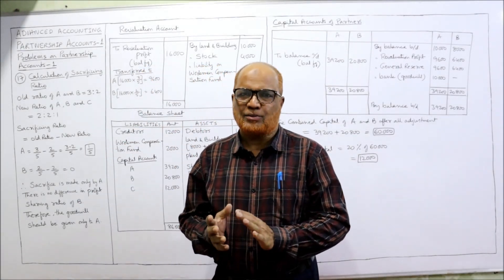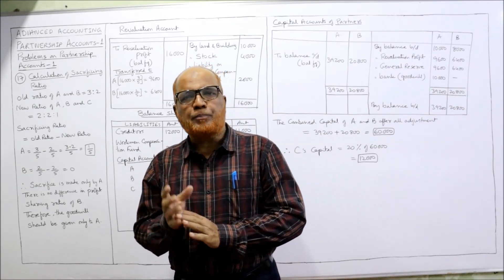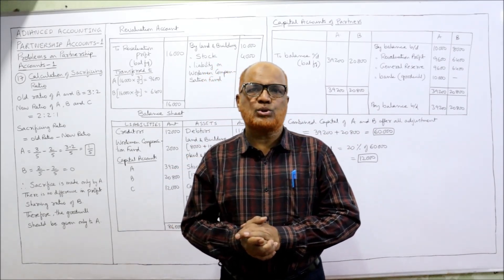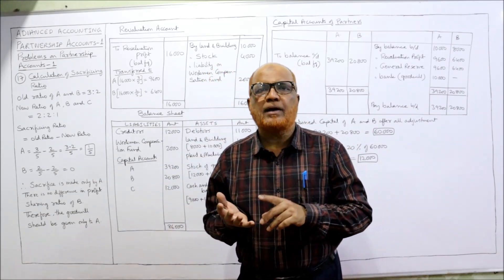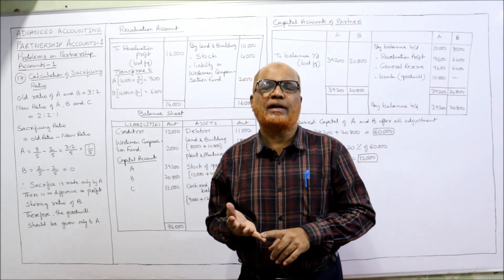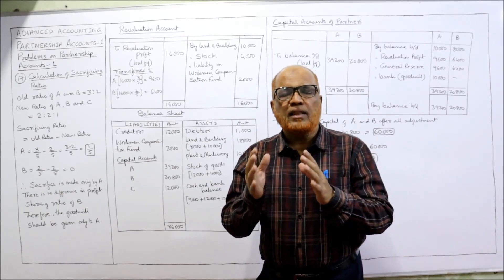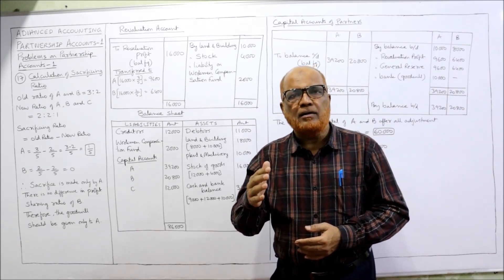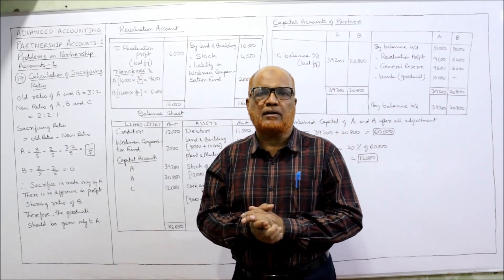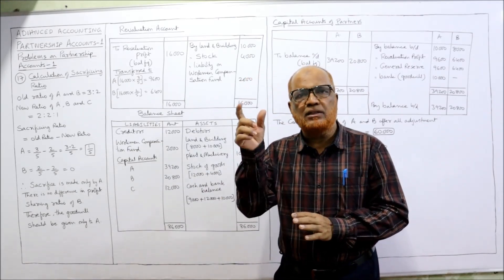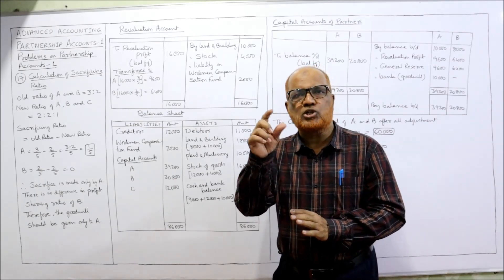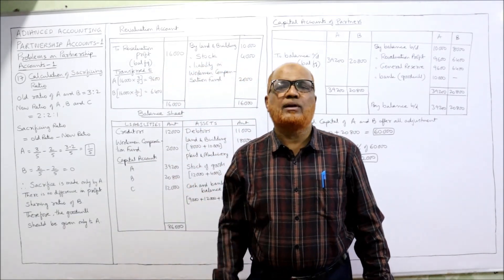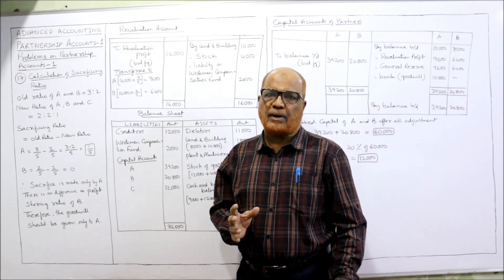Welcome to my channel, I'm Harsha Malikha. This is the last problem on admission of a partner. In partnership accounts one, we are dealing with how to prepare capital accounts by fluctuating capital method and fixed capital method, what adjustments to be made when a new partner is admitted, when a partner retires, or on the death of a partner. This 17th problem is the last problem on admission; from the next video we'll start problems on retirement of a partner.